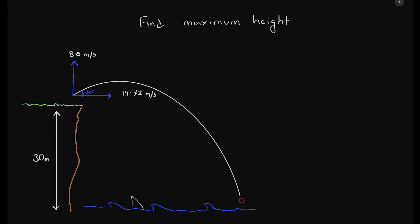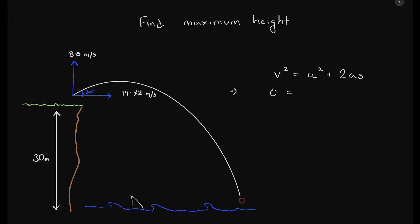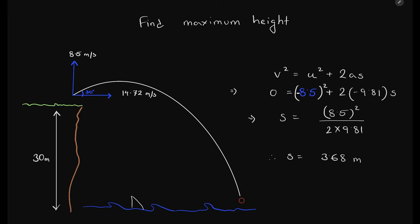Let's say the question asks for the maximum height of the ball. I do not have the time, so I cannot use the formula v = u + at. That is why I will be using the formula v² = u² + 2as. As we need to find the height, which is a vertical component, we will be using the vertical values for velocity. The initial velocity is 8.5 meters per second, and the final velocity when the ball reaches the top is zero. The answer comes out to be 3.68 meters.